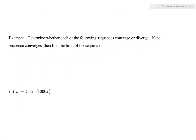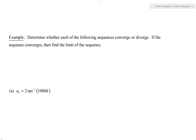First example: we have a sequence defined by the explicit formula a_k = 2·arctan(1000k). To determine whether the sequence converges or diverges, we look at the limit as k goes to infinity of a_k = 2·arctan(1000k).